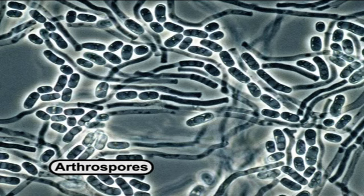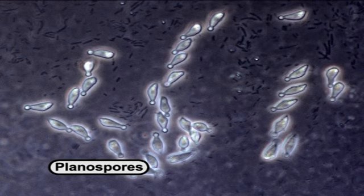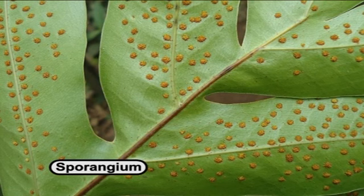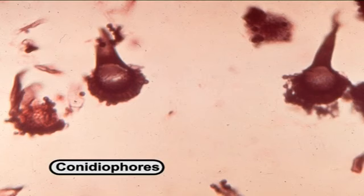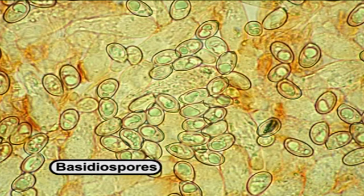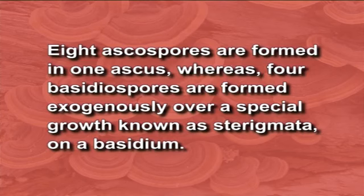Arthrospores are another type of asexual spores produced by fungi. If these are surrounded by thick walls, they are called chlamydospores. Not all spores are motile; motile spores are also known as zoospores or planospores and may have one or two flagella. If spores are produced internally in a sporangium, they are called sporangiospores. Conidiospores are spores formed externally over a conidiophore. Ascospores and basidiospores are examples of spores produced by sexual reproduction. These are produced inside the ascus or outside of the basidium respectively. Eight ascospores are formed in one ascus, whereas four basidiospores are formed externally over a special growth known as sterigmata on a basidium.